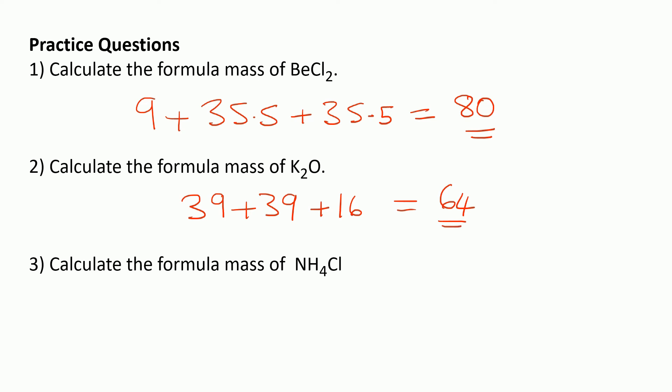In the final question, calculate the formula mass of NH4Cl. Nitrogen has a mass of 14, then we've got four hydrogens, each with a mass of 1, and then we add on one chlorine which is 35.5. The total is 53.5, so the formula mass of NH4Cl is 53.5.